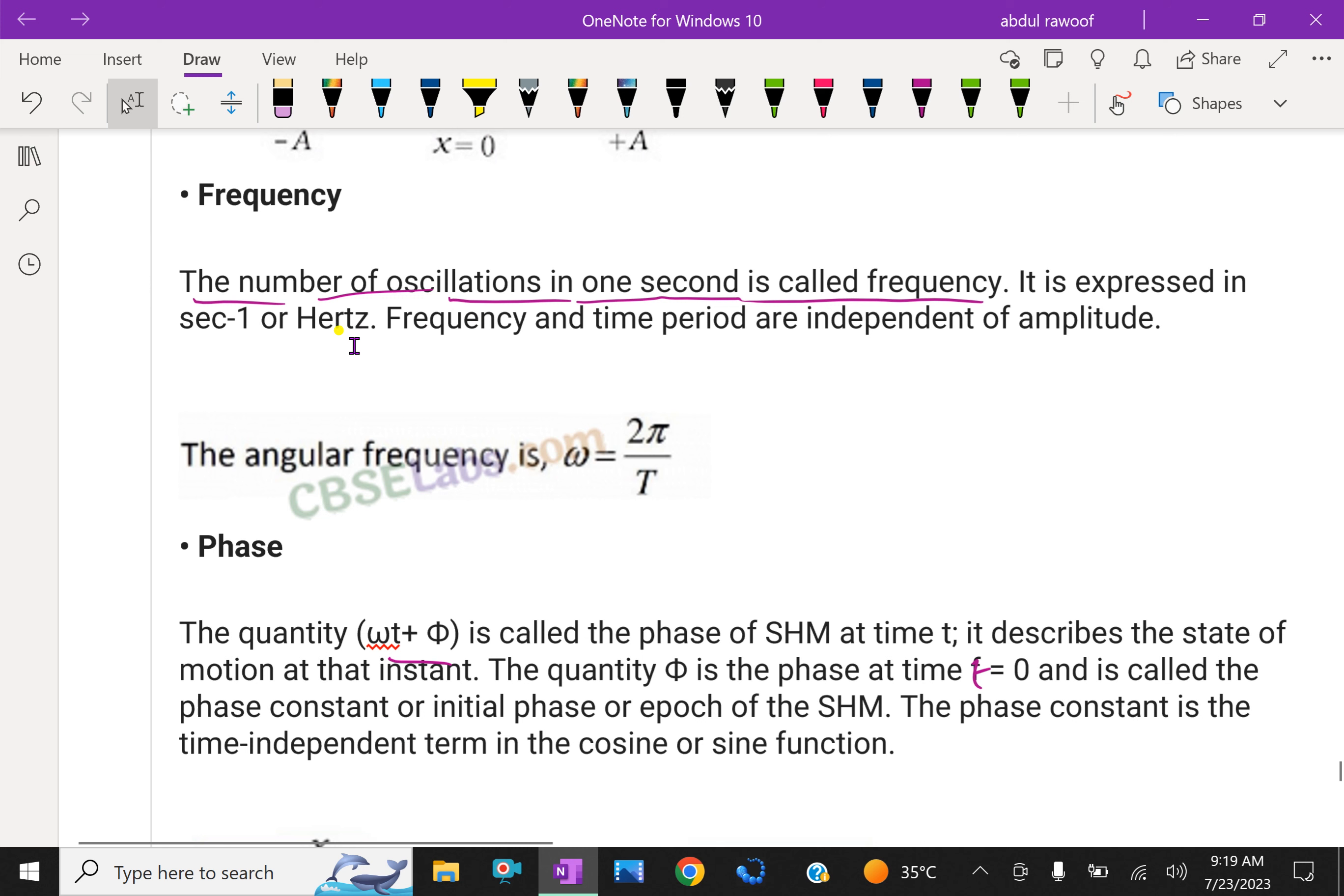Frequency: the number of oscillations in one second is called the frequency. It is expressed in per second or hertz. Frequency and time period are independent of amplitude. How big the amplitude, it won't affect the time period. The angular frequency ω = 2π/T.